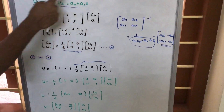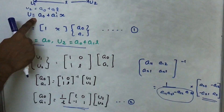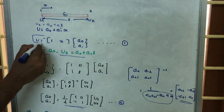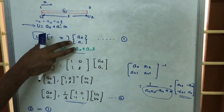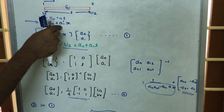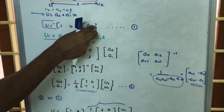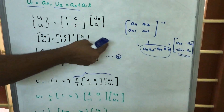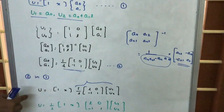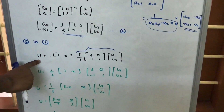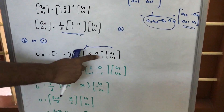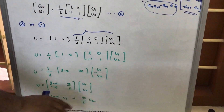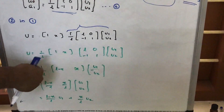Now we have obtained a0 and a1. In the displacement equation, u can be written as u = [1, x] * [a0, a1], which is just the matrix representation of the original arbitrary equation. In the arbitrary equation, a0 and a1 are unknowns, so this matrix [a0, a1] is substituted from the inverse result. We are substituting a0 and a1 so that u equals [1, x] times (1/L) * [[L, 0], [-1, 1]] * [u1, u2].